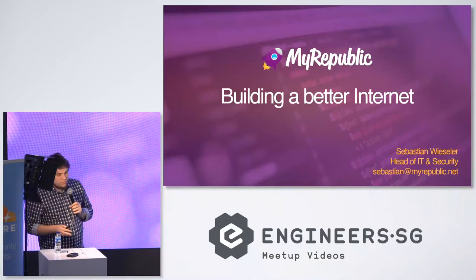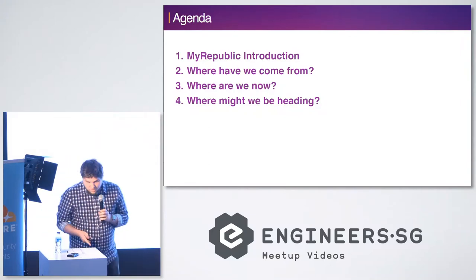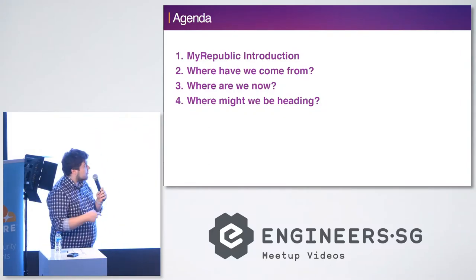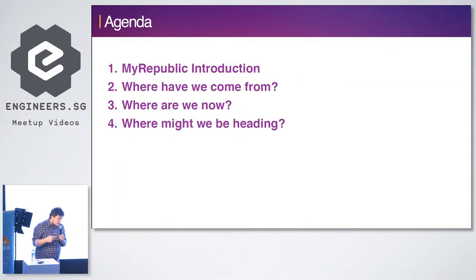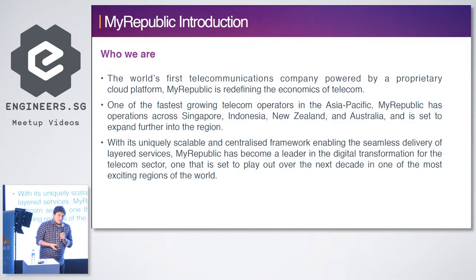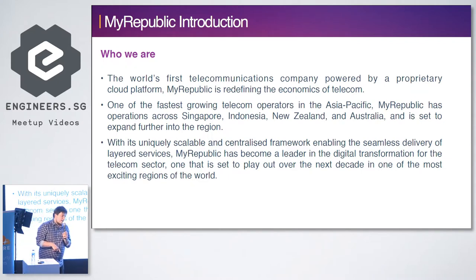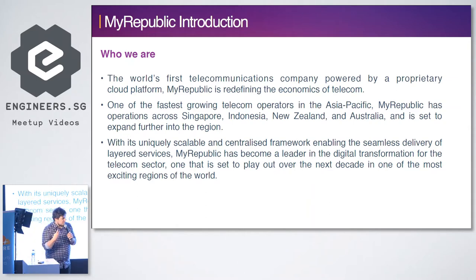Coming to more like a customer story from MyPublic. I'm talking about what we are as a company, then looking a bit in the past, the present, and the future. MyPublic, as most of you will know, is a Singapore company — a fiber broadband provider in Singapore. We have our headquarter in Singapore, then rapidly expanded to New Zealand, Indonesia, and also Australia. So we are delivering internet access to customers.